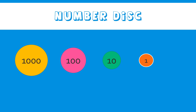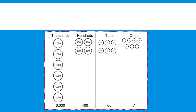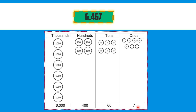Aside from blocks, flats, longs, and squares, we can also use Number Discs to represent and visualize numbers. We have a disc for thousands, hundreds, tens, and ones. Let us try this example. How many thousands do we have? 1, 2, 3, 4, 5, 6 — six thousands, meaning we have six thousand. How many hundreds? We have four, meaning four hundred. How many tens? We have six tens, meaning sixty. How many ones? We have seven ones, equal to seven. If we add all these values, we will get six thousand four hundred sixty-seven.